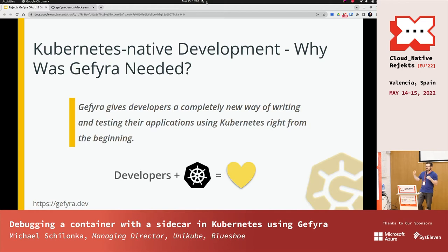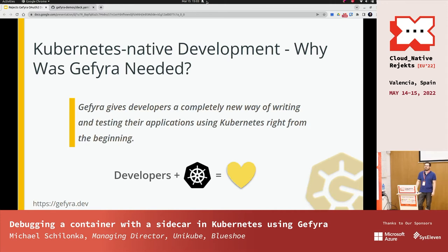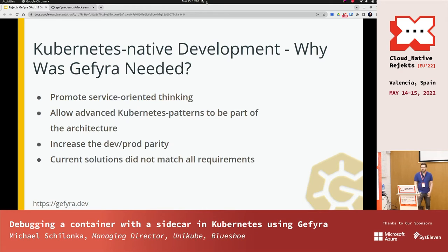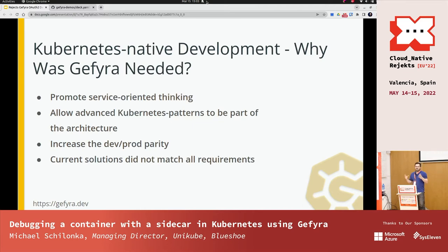And then afterwards testing, and basically everything around working with Kubernetes and making this as convenient as possible - as convenient as a Docker Compose app, for instance. What we're trying to do is promote a service-oriented architecture to be applied to all kinds of modern applications. And what we'd like to see more often is that advanced Kubernetes patterns become part of software architectures. One of my favorites is the sidecar pattern for a number of use cases.